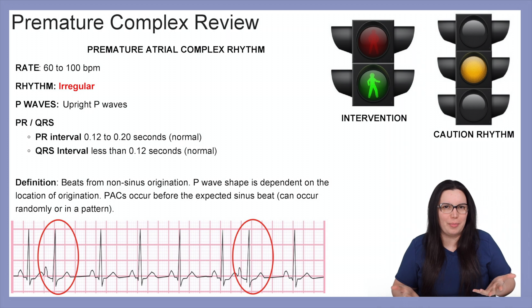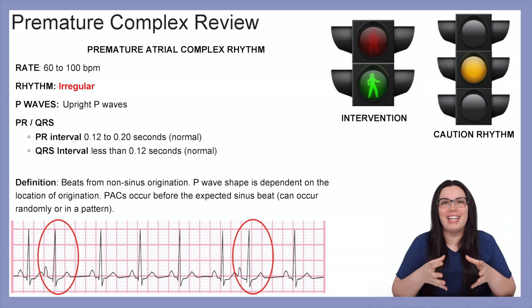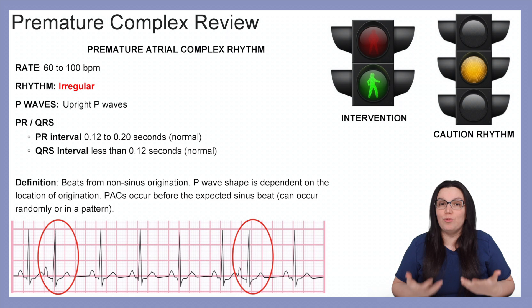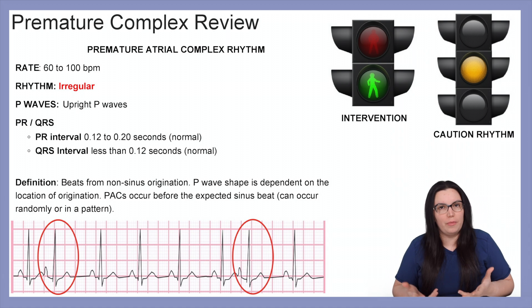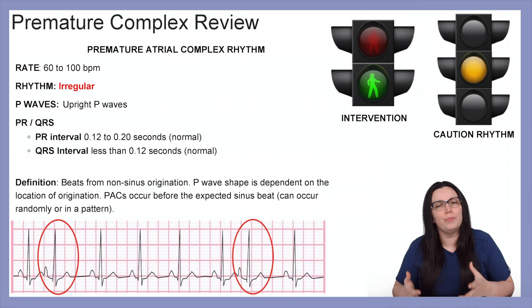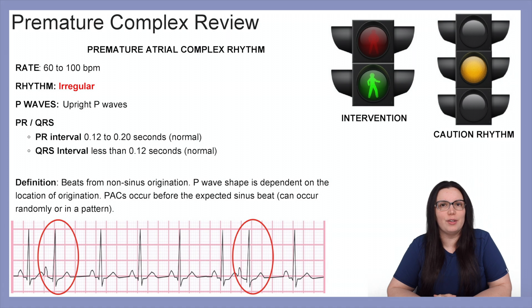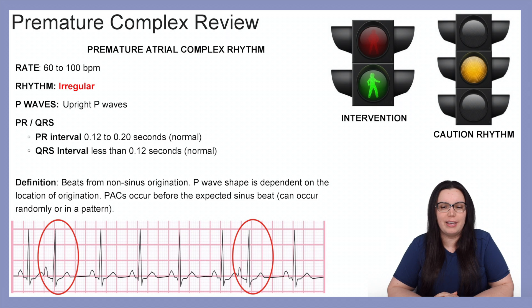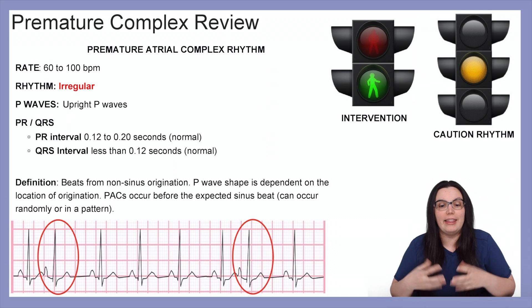The first premature complex we're going to discuss is premature atrial complex rhythms. The rate is usually between 60 to 100 beats per minute and the rhythm is irregular. P waves should be upright as normal, and the PR interval as well as the QRS interval should both be normal. The definition for this rhythm is beats from non-sinus origination. P wave shape is dependent on the location of origination, and PACs occur before the expected sinus beat and can occur randomly or in a pattern.